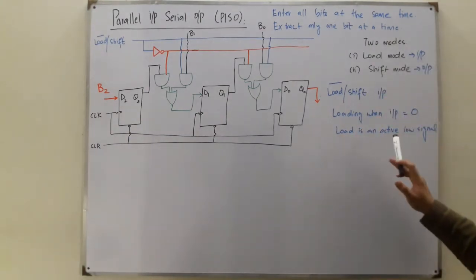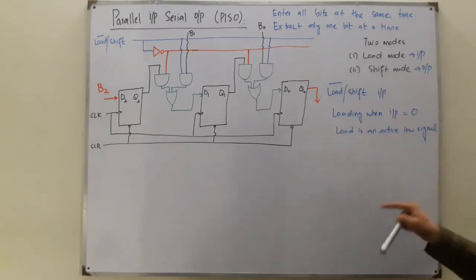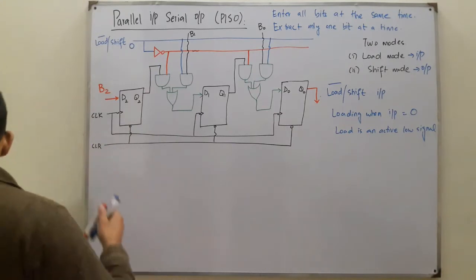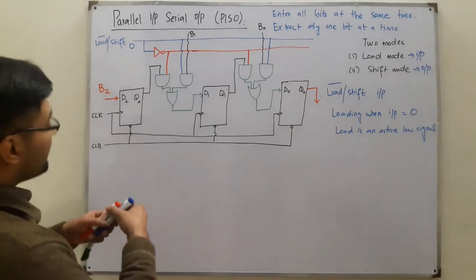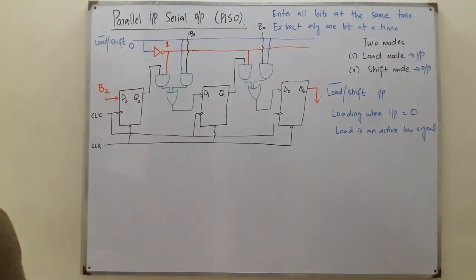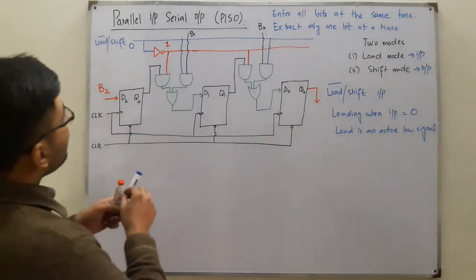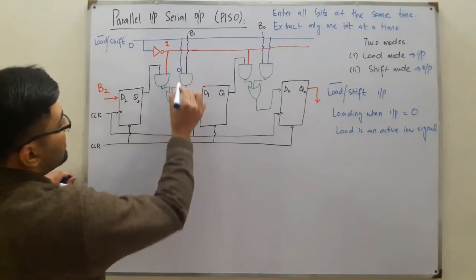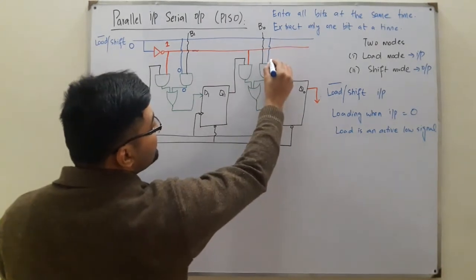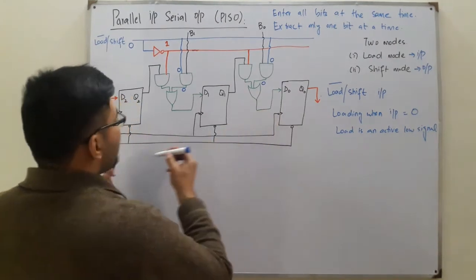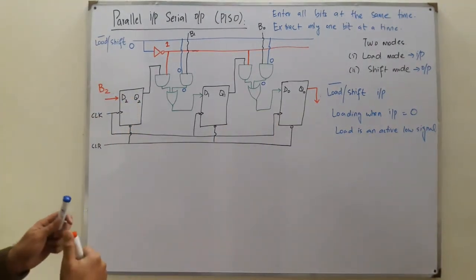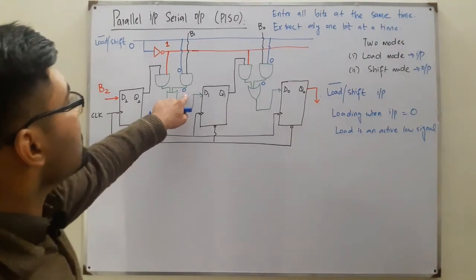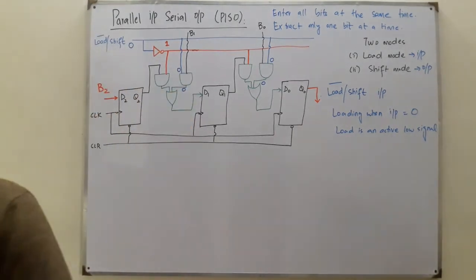The load is an active low signal, so it should be zero. When we make this load signal zero, the complement becomes one. Now when an AND gate receives a zero input, the output is zero — anything ANDed with zero is zero. So the gates connected to the direct load signal give zero output.